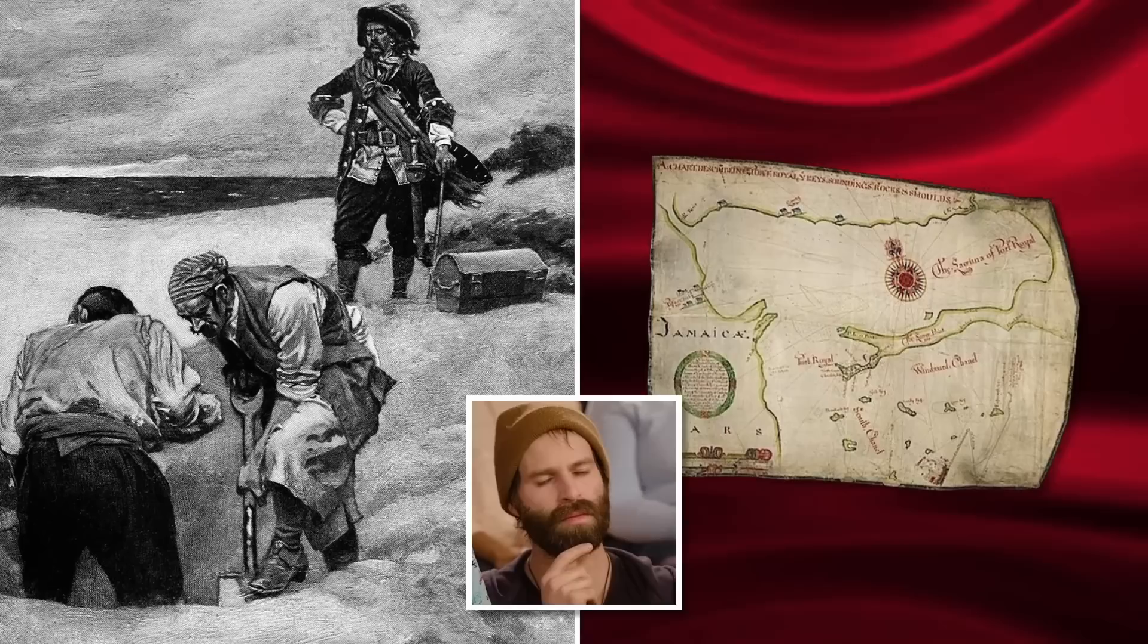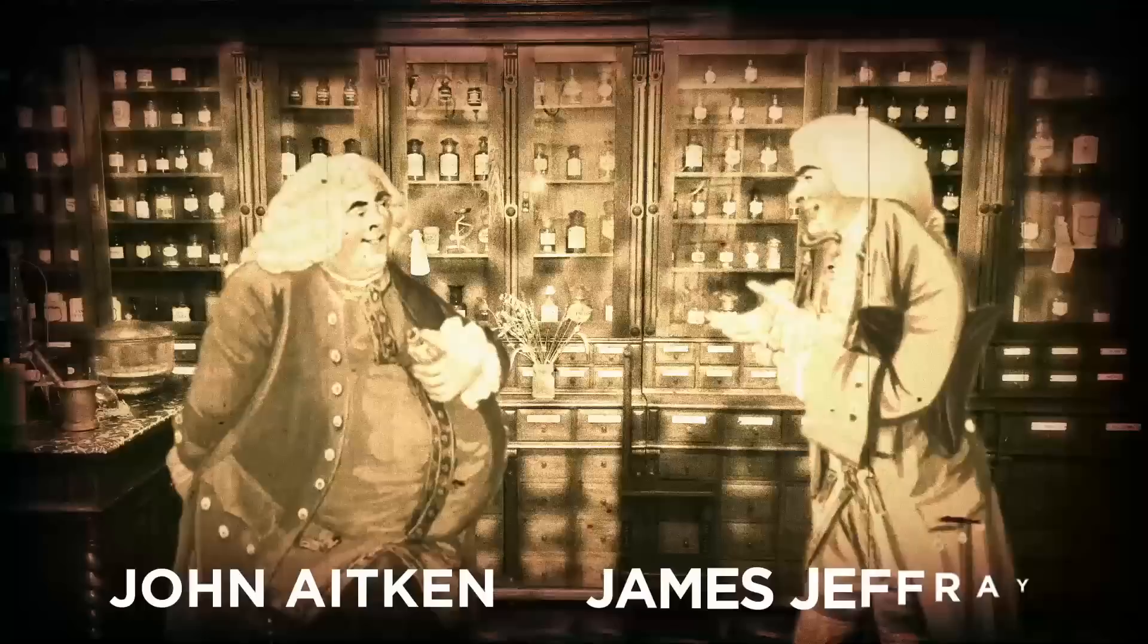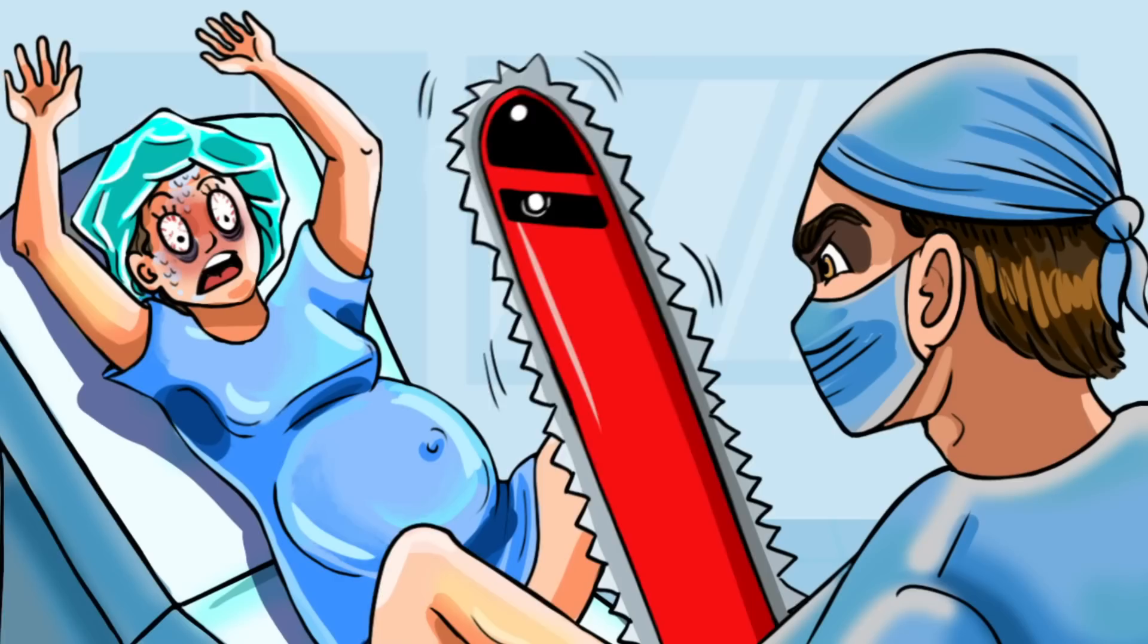Chainsaws were invented for childbirth. Plenty of modern-day products were invented for not-so-modern uses. Just ask John Aitken and James Jeffrey, the two Scottish doctors who dreamed up the chainsaw to help deliver babies. Yes, really. The tool, or weapon, now so closely associated with the timber industry and B-grade horror flicks, once played a major role in the miracle of childbirth.